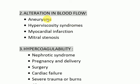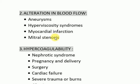Causes of alteration in blood flow include aneurysms, hyperviscosity syndromes, myocardial infarction, and mitral stenosis. An aneurysm is actually the weakening of the arterial wall that causes distension or bulge formation, where blood accumulation or stasis occurs, disturbing normal blood flow. Similarly, if the normal mitral valve is stenosed, it obviously leads to alteration in blood flow in the heart.